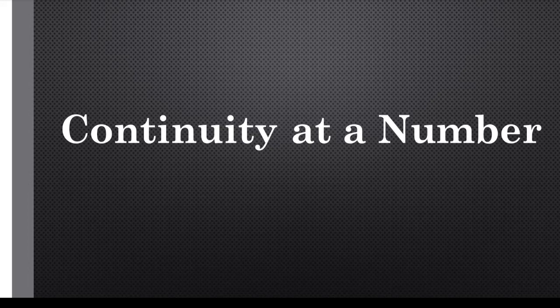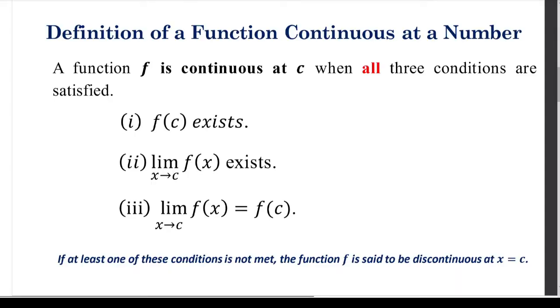In this video, we're going to cover continuity of a function at a number. A function is said to be continuous at a number if all these are satisfied: first, f(c) exists; second, the limit of f as x approaches c exists; and third, the limit of f(x) as x approaches c is equal to f(c).